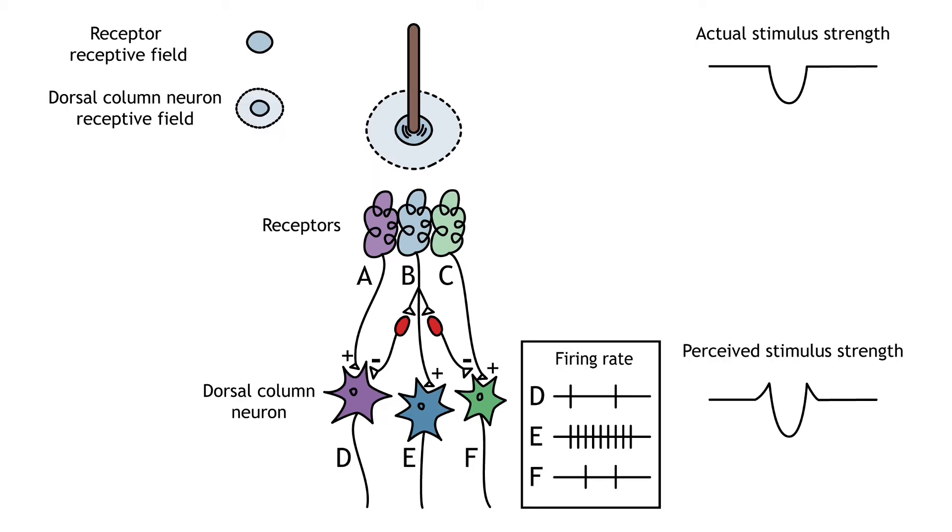The center-surround structure of the receptive field is critical for lateral inhibition to occur. Lateral inhibition is the ability of the sensory systems to enhance the perception of edges of stimuli. At a point or an edge of a stimulus, because of the inhibitory interneurons, the perceived stimulus strength will be enhanced compared to the actual stimulus strength.